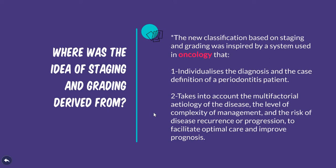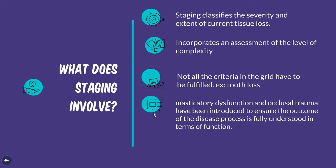Staging is equivalent to severity in the previous classification. Staging classifies the severity and extent of current tissue loss. We have four stages: Stage 1, 2, 3, and 4. It incorporates an assessment of the level of complexity — it shows the complexity of the disease. Not all criteria present in the flowchart need to be fulfilled; for example, tooth loss is not always required for staging the disease.